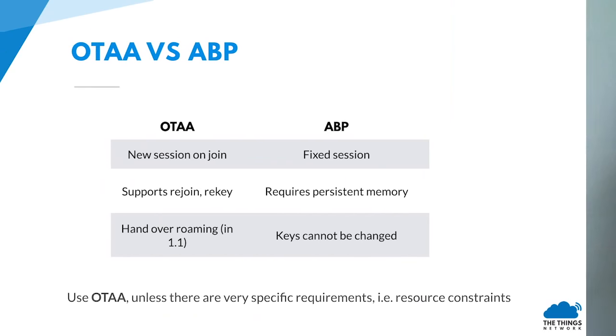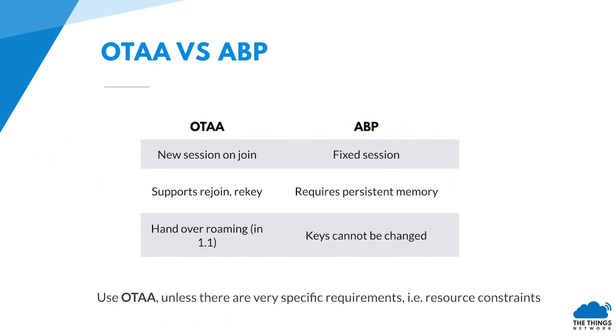It's best to use over-the-air activation in any case, except when you have very specific requirements like resource constraints or when you don't have downlink — which you need for the join procedure, because the network needs to be able to send a join accept. Generally speaking, for secure solutions, always use over-the-air activation.